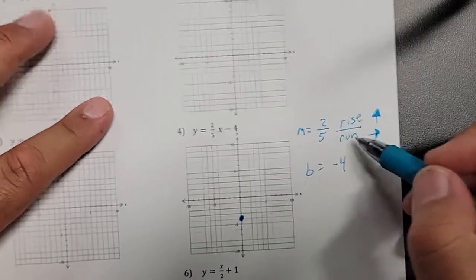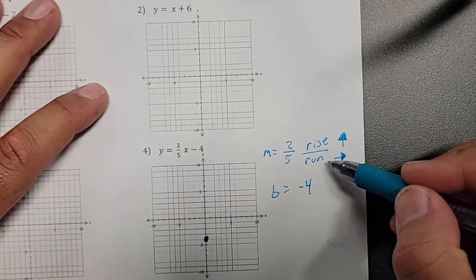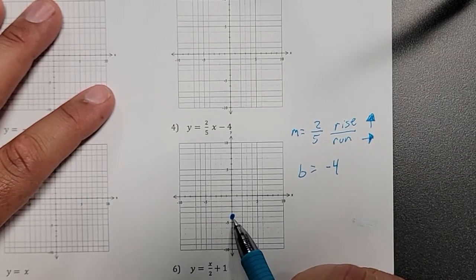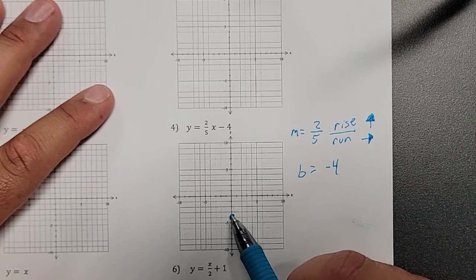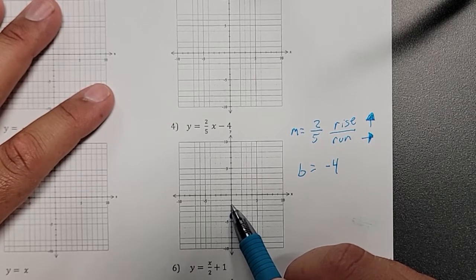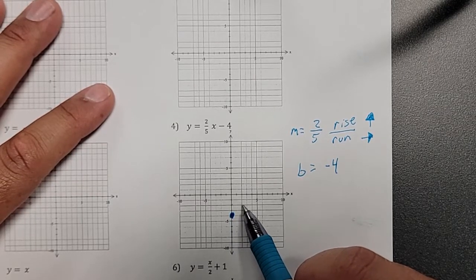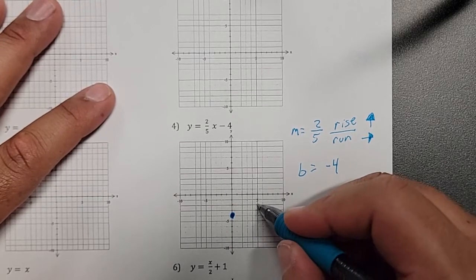Now from this point, I need to count 2 units going up and 5 units to the right. So the way it works, everyone put your point or your pencil here. So that's 0. I'm going to go 2 up: 1, 2, and then 5 to the right: 0, 1, 2, 3, 4, 5. So this is my next point.